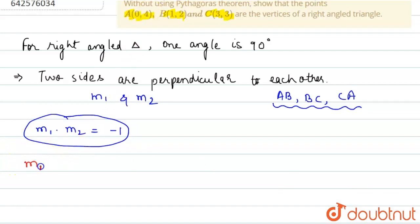The slope M_AB equals—these are the points (0,4) and (1,2). So, the slope for AB will be (2 minus 4) upon (1 minus 0). This equals minus 2.